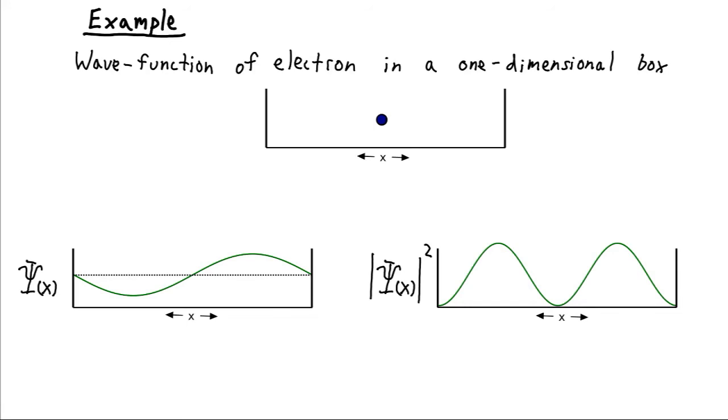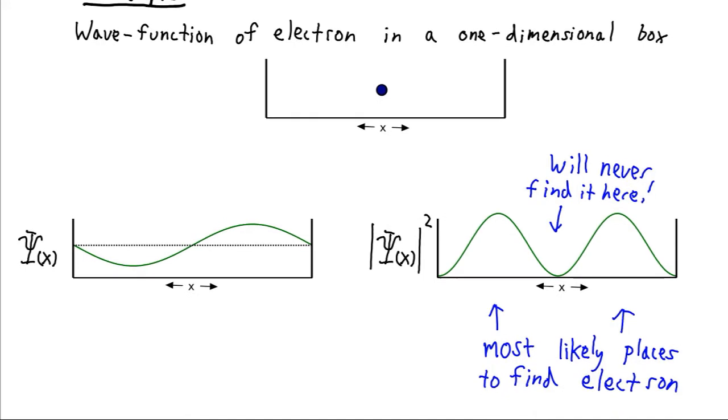So according to this, it's very likely that we will observe the electron in this region or this region. There's basically no probability at all that we would observe it here or that we would observe it here over at the edges. So that's something very interesting. That's definitely different from what we would expect based on classical physics.